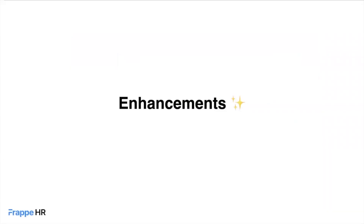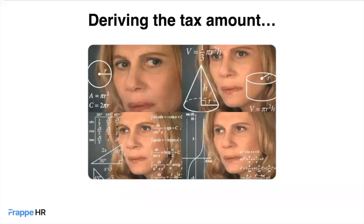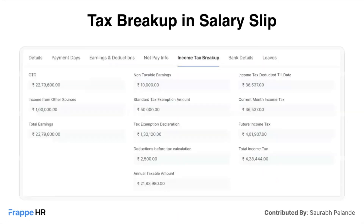Let's look at some enhancements that have gone into Frappe HR in the past few months. Deriving tax amounts on your salary slip can be cumbersome because you may not know how tax is being calculated. To fix this, Sora introduced an income tax breakup tab in the salary slip that shows a complete overview of your CTC, taxable earnings, exemption amounts, deductions before tax calculation, annual taxable earnings, and future, current, and total income tax — giving you a complete picture of how your tax is calculated.